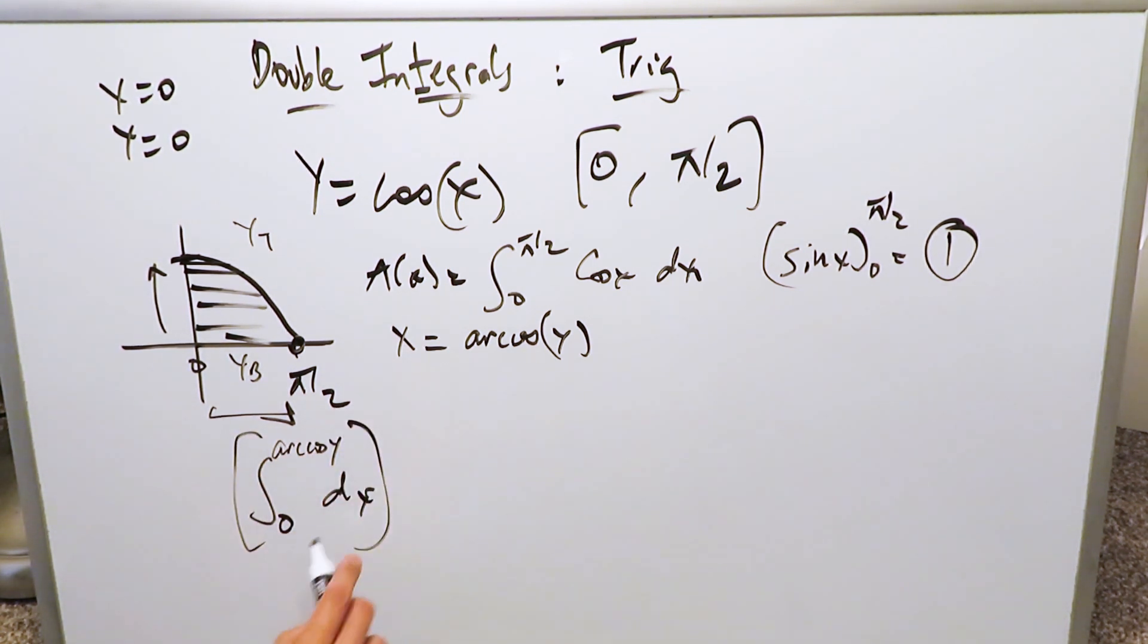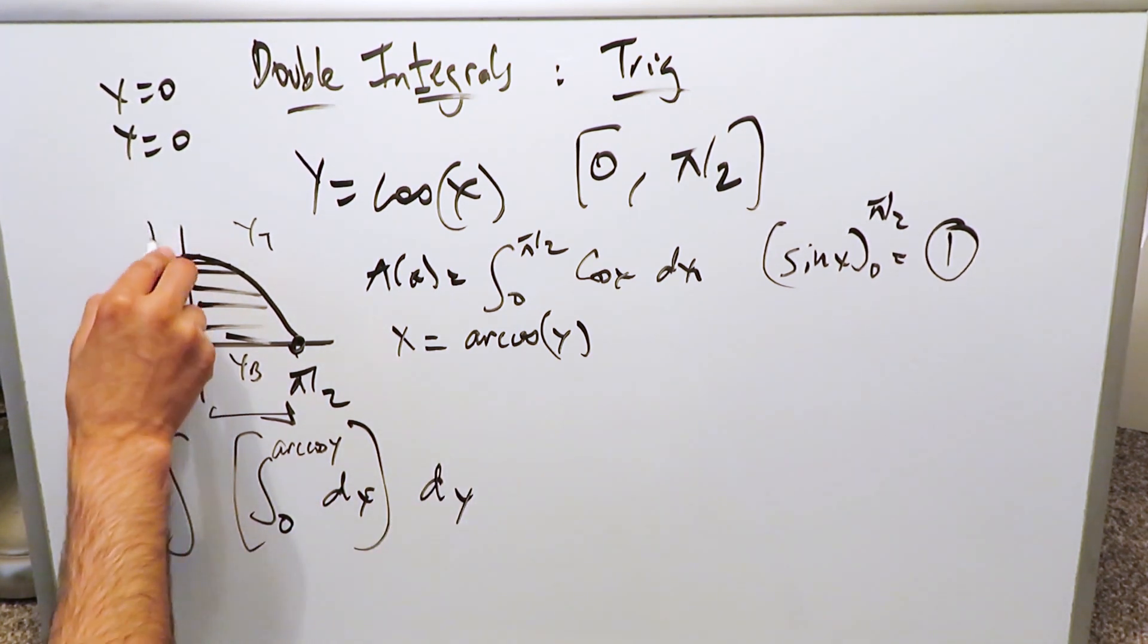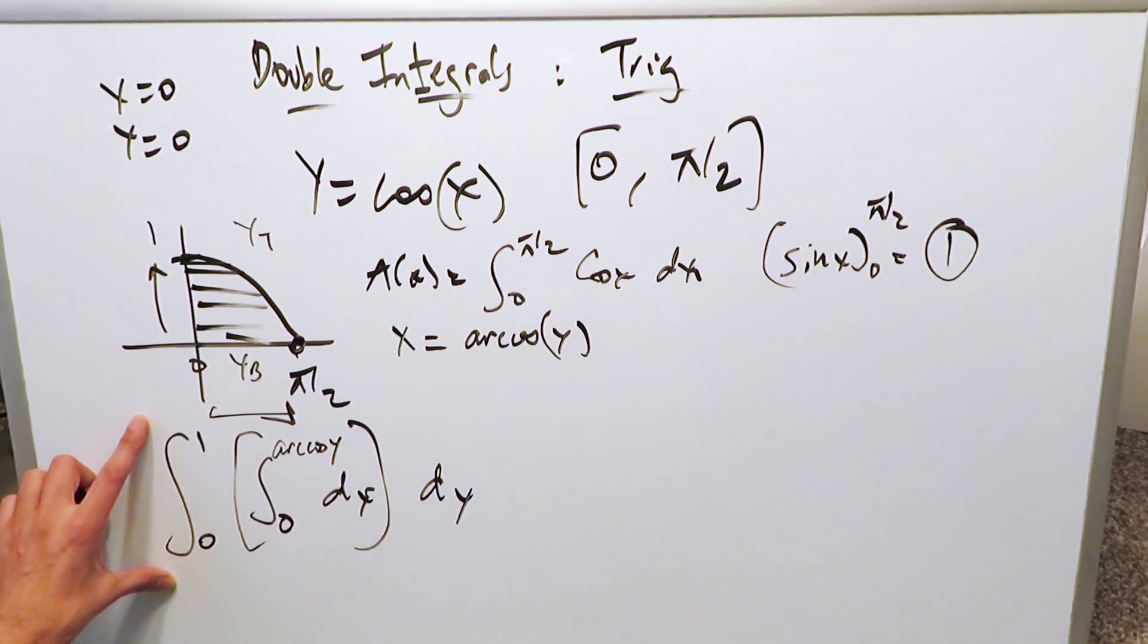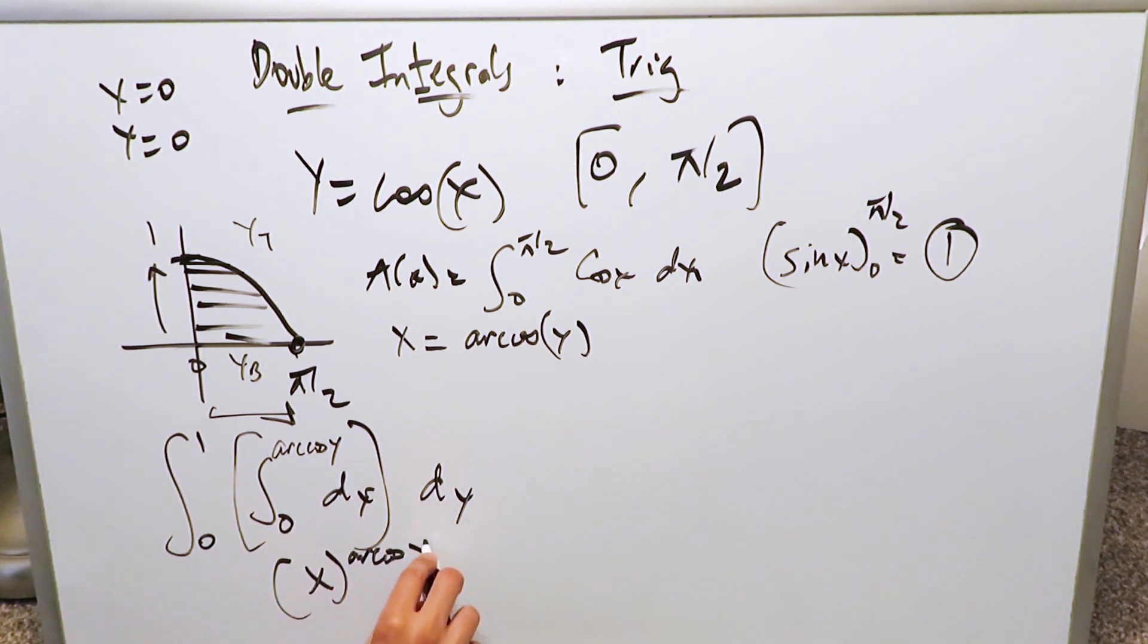This entire definite integral will integrate upwards with respect to dy from zero up to one. Cosine of zero is one, so that's your upper limit for your y integral, zero to one. Now you have to do this, it's not hard. From here you're getting an x arc cosine y and a zero.